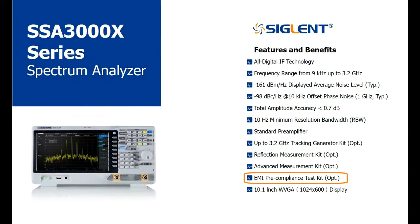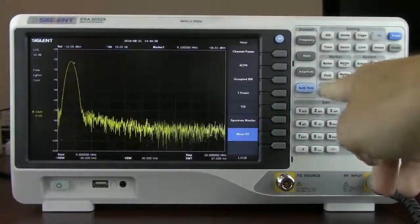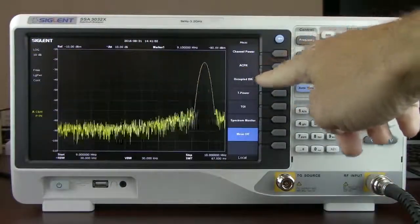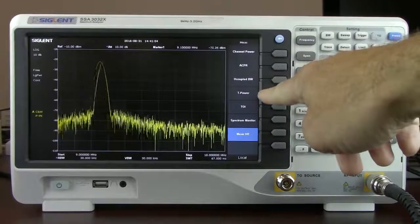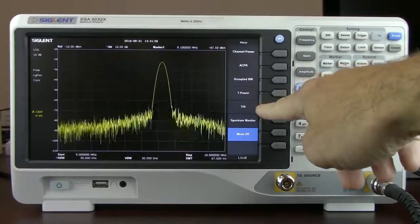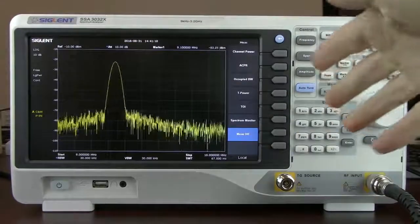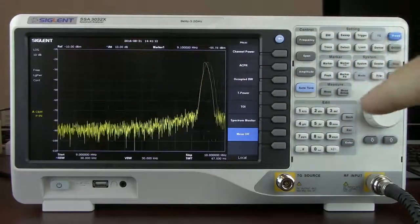The SSA 3000s are also available with the Advanced Measurement Kit or AMK option. The AMK option includes a number of standard measurements used in broadcasting. If we press the measure key, we'll see channel power, adjacent channel power, occupied bandwidth, total power, third order intercept, and spectrum monitor. I'd like to show the spectrum monitor because this is also a feature that isn't available on many other spectrum analyzers.